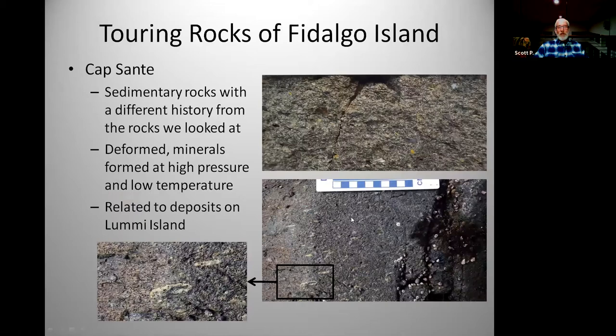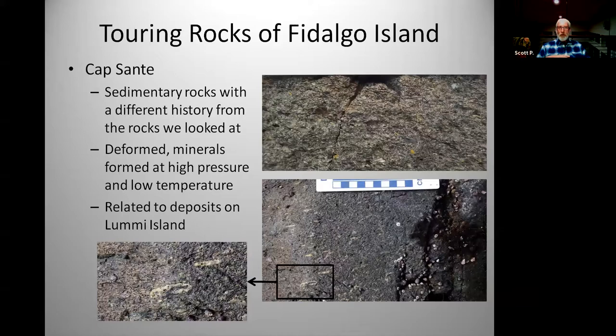Some more rocks not directly related to the Fidalgo Ophiolite, but really interesting: there's a place called Cap Sante on the northeast side of Fidalgo Island, just east of the big marina just off downtown Anacortes — it's a city park. It has these very different looking rocks from anything in the Fidalgo Ophiolite; they're strongly metamorphosed, meaning a lot of pressure and heat have been applied after burial. You can tell by these clasts that have been flattened — that takes a lot of pressure. This is actually part of the Lummi Formation, just a little sliver included on the northeast side of Fidalgo Island.